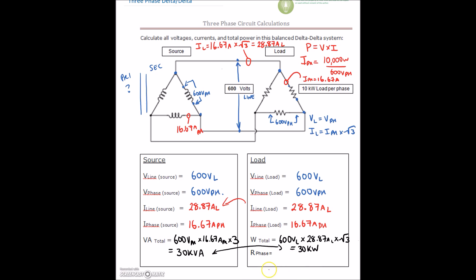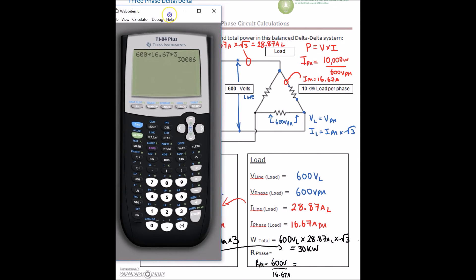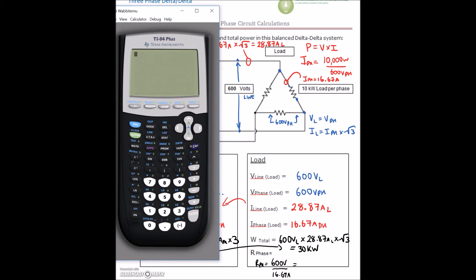Last thing — we need to find the resistance on the phase. That's straight Ohm's law. We have 600 volts and 16.67 amps flowing on the phase. So resistance equals 600 volts divided by 16.67 amps, which gives us roughly 36 ohms.